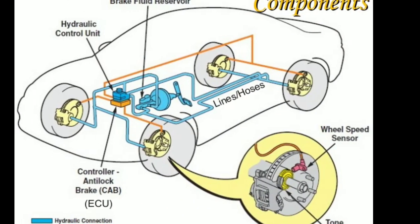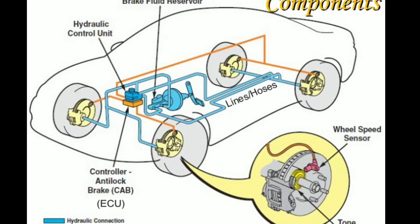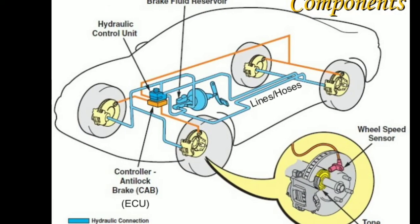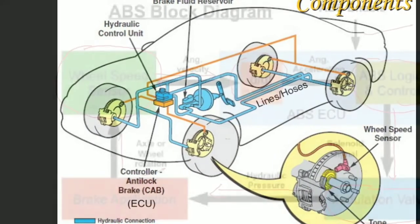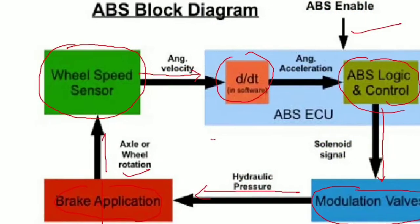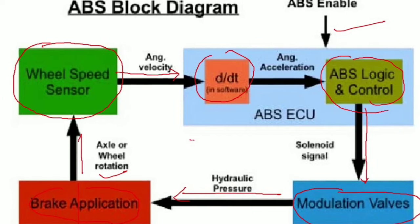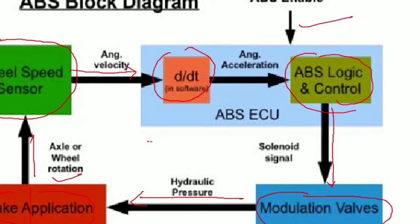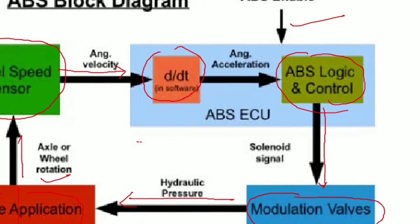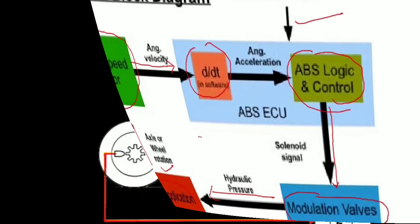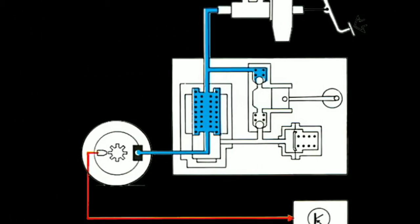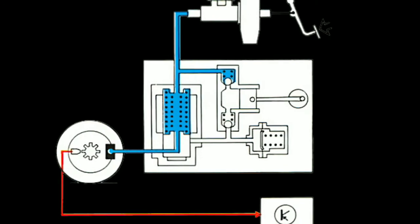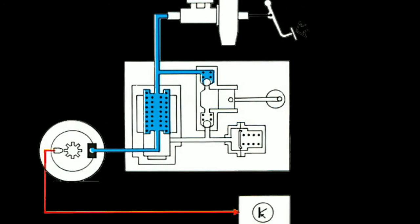By looking at the ABS brake system parts, we can understand how the system works in more detail. First of all, the system is managed by the ABS electronic control unit. The basic parts of the system include the ABS control group, which contains an electric hydraulic pump, solenoid valve body and control unit, wheel sensors, and wheel rotors.